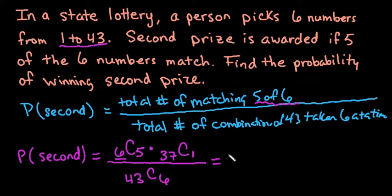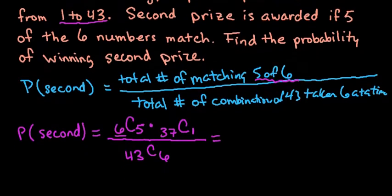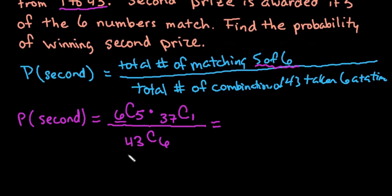In the denominator, we have 43 total numbers that we are taking six at a time. I am going to do this individually because I have seen on some homework platforms that they require you to leave it as a fraction rather than putting it as a decimal.